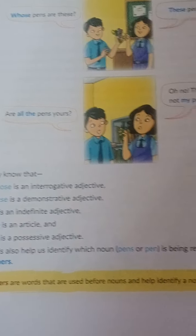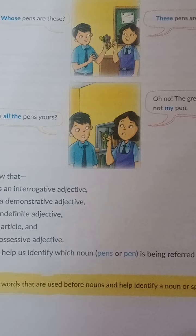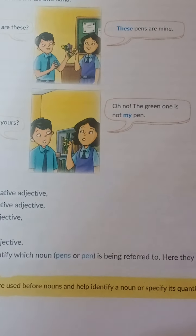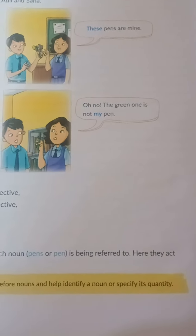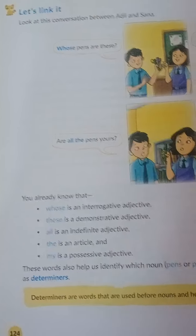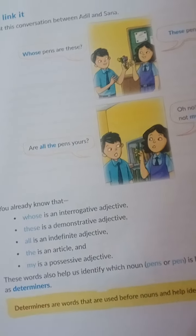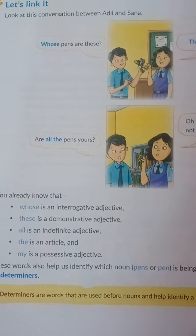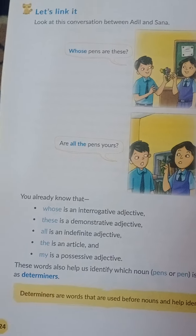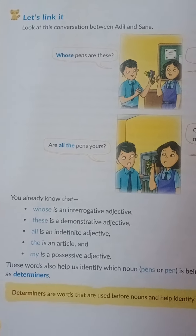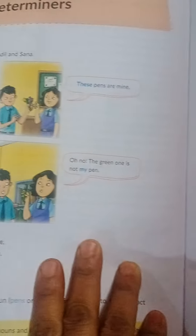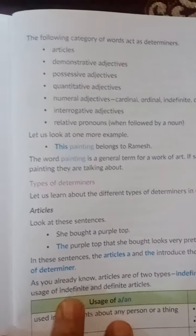In the book it is given: determiners are the words that are used before a noun and help identify a noun or specify its quantity. So it tells us more about the noun — it spots the noun, it indicates the noun, or it can identify the noun. So what are the categories of determiners? Let us see.